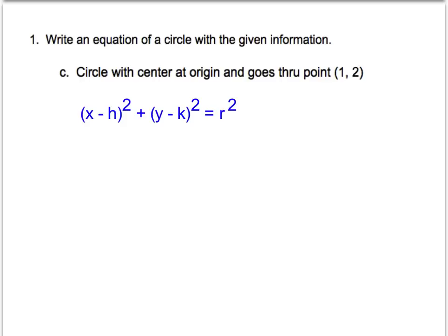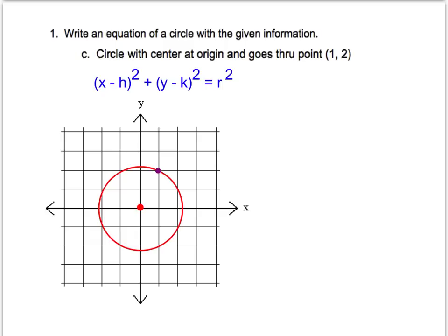You don't need to graph this information, I'm going to just show you the graph of this though so we can get a visual on what they're asking us to do. Again, the circle is centered at the origin so I put my center point at the origin and then the second piece of information, the circle goes through point (1, 2). I just graphed point (1, 2) on the coordinate graph and then drew the circle around that so I could get a visual of what they're asking me.